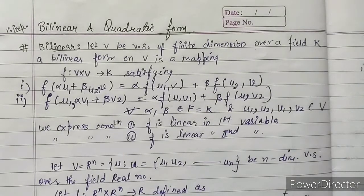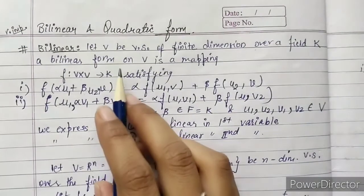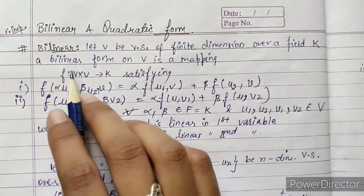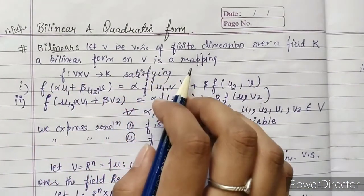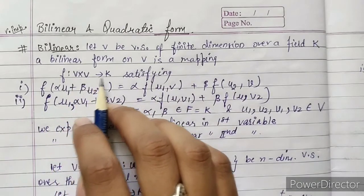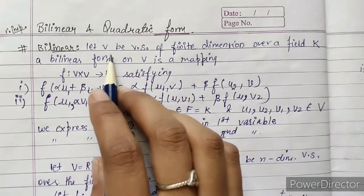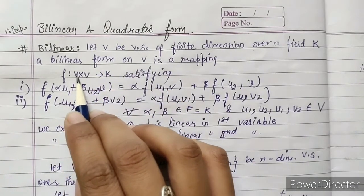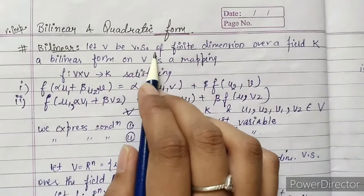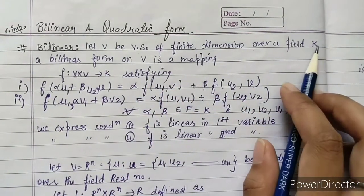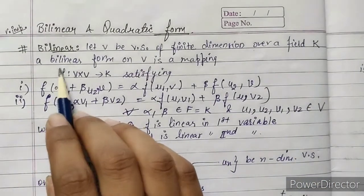In this video, we will start with Bilinear and Quadratic Forms. First, Bilinear Form: Let V be a vector space of finite dimension over a field K. A bilinear form on V is a mapping f: V × V → K, satisfying two conditions. V is a vector space which is finite-dimensional over the field K, and we are talking about bilinear form.